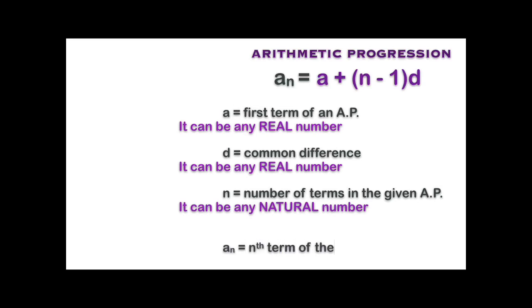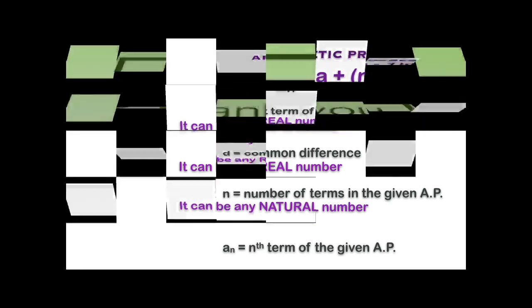And aₙ is the nth term of the given AP. For example, the sixth term is a₆, the seventh term is a₇, and the twenty-eighth term is a₂₈. Thank you for learning.